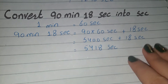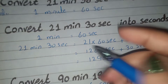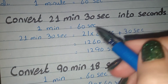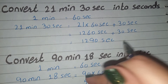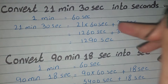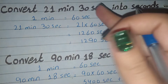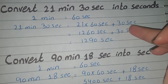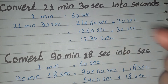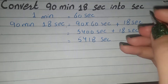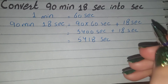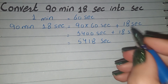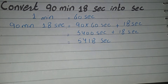Let us see another example. We have 21 minutes and 30 seconds. Here we multiply 21 minutes by 60, then add the 30 seconds — just like the previous method. If you like it, subscribe. Thank you for watching this video, take care.